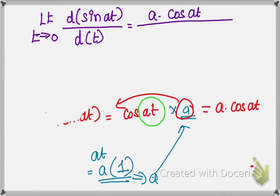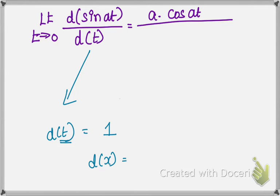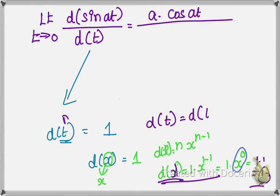Now we differentiate the denominator. The denominator is t, and differentiating t with respect to t gives 1, by the power rule: d/dt of t¹ = 1·t⁰ = 1. So the denominator differentiation gives 1.